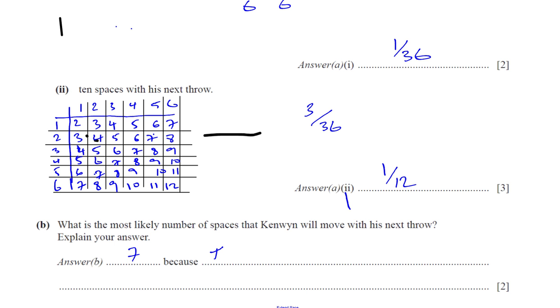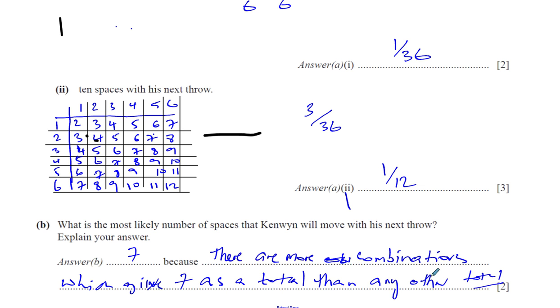Because there are more combinations which give 7 as a total than any other number. All the other totals, any other total, the number of times they occur is less. So 7 is the most probable one.